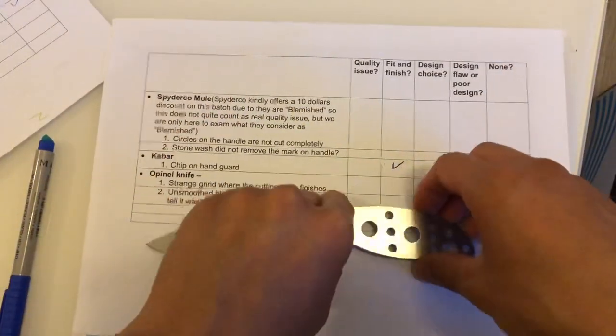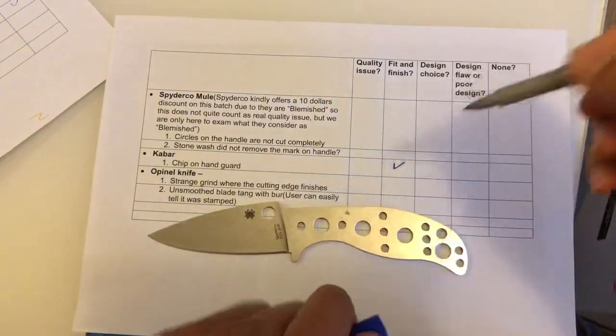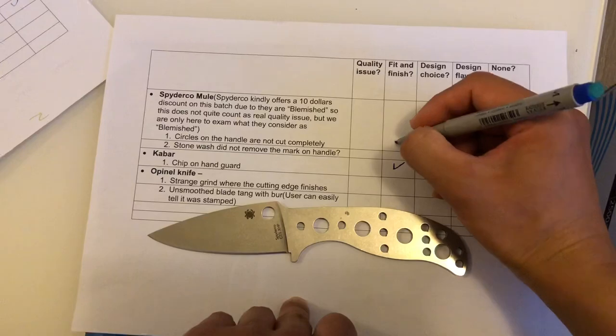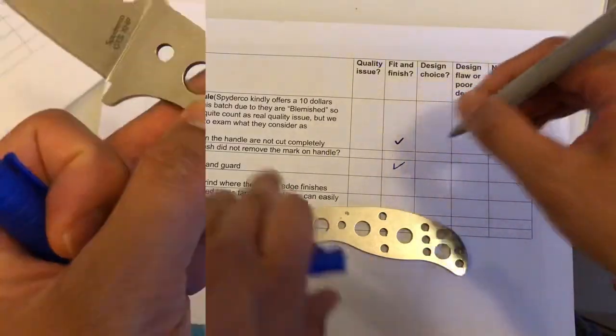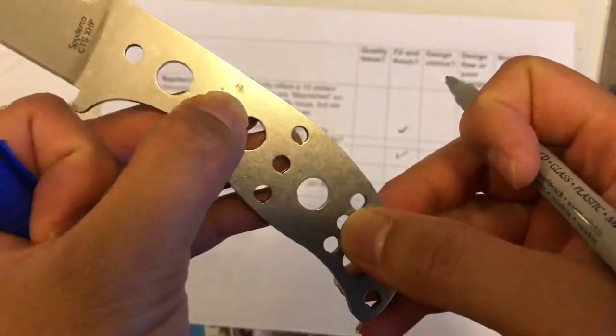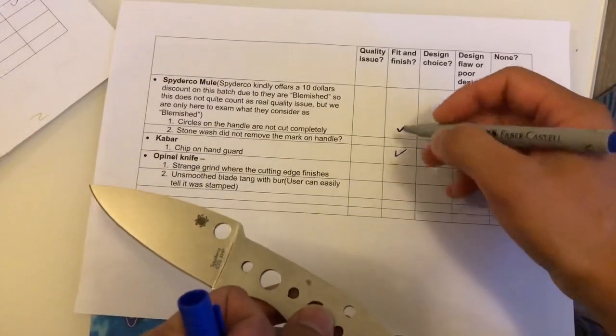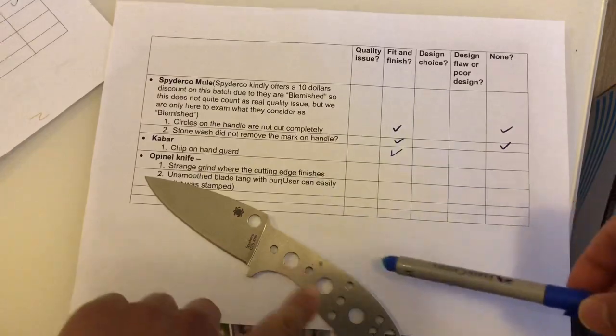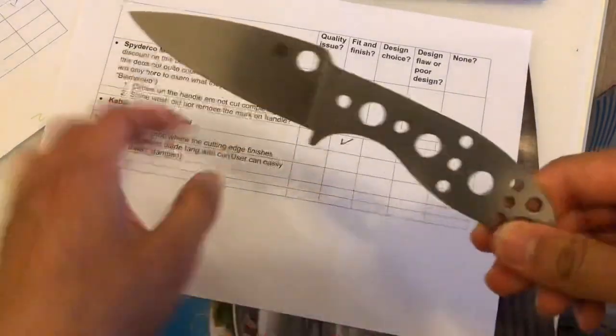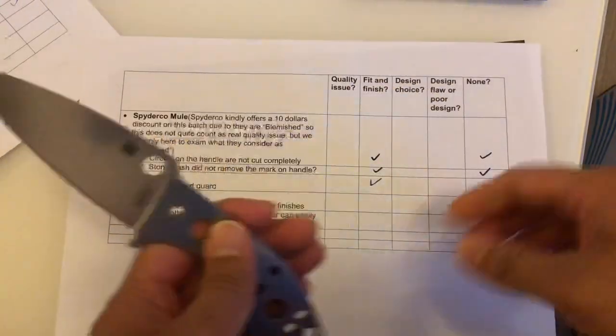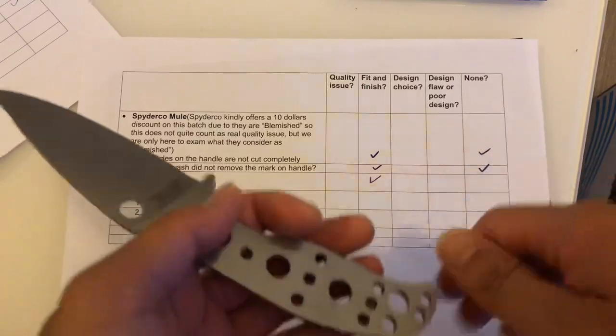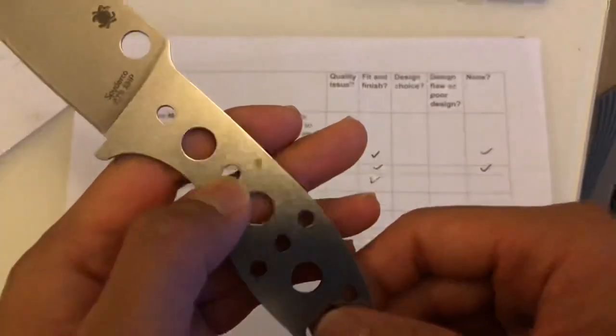So anyways, I'll say the circles on the handle are not cut completely. That was just a fit and finish because I don't think that was really that much of an issue. And the stonewash didn't remove this mark and that would also be just a fit and finish issue. So given that both parts were actually supposed to be covered by the handle scales, I'll say in many ways that these two are not even actually a problem at all in some people's eyes because you can't actually see it.